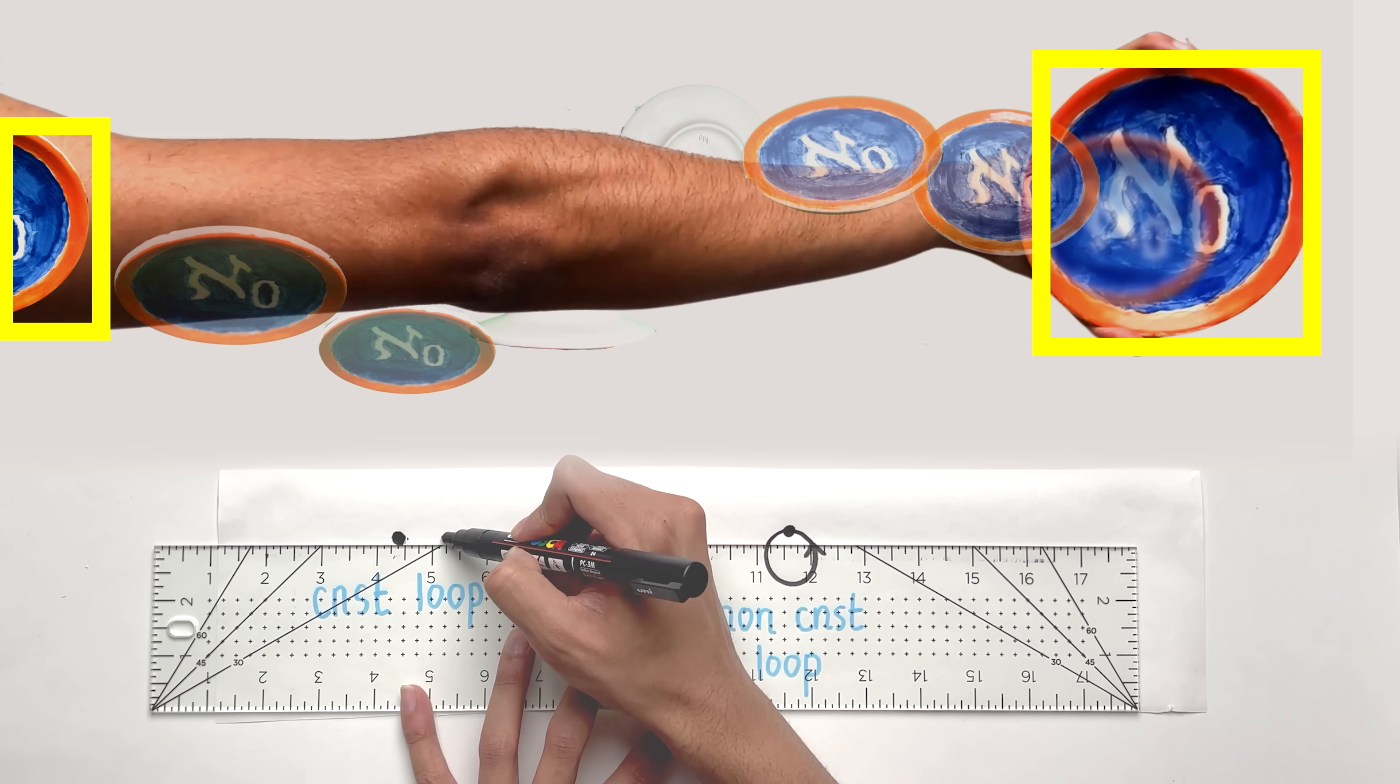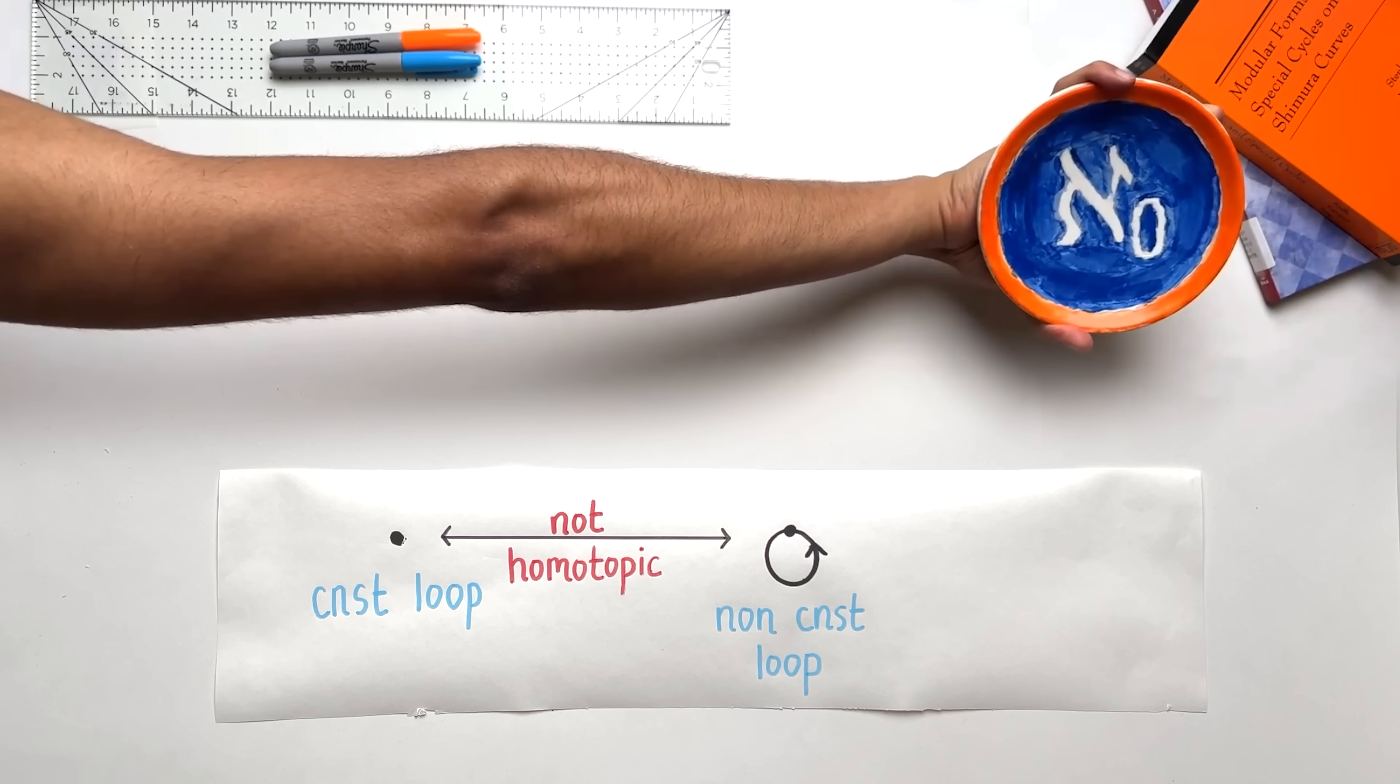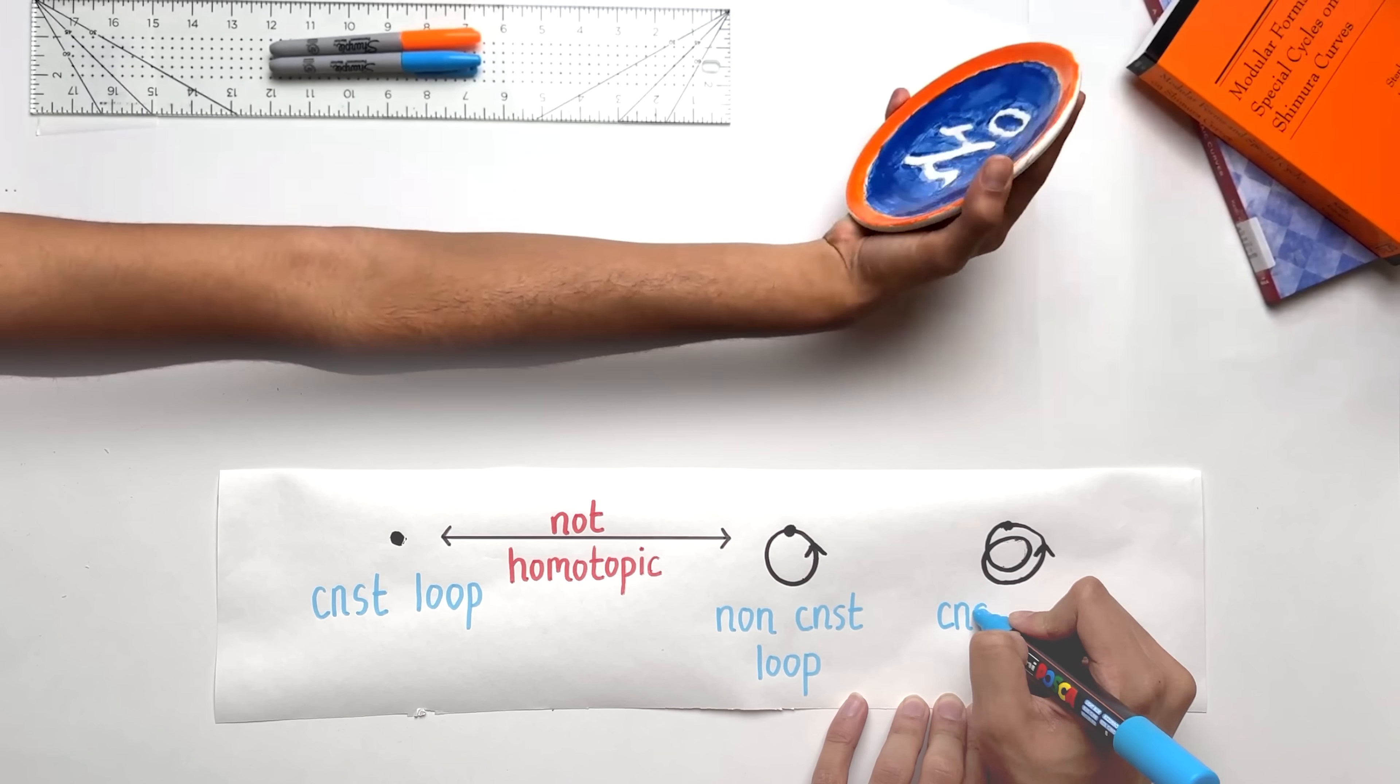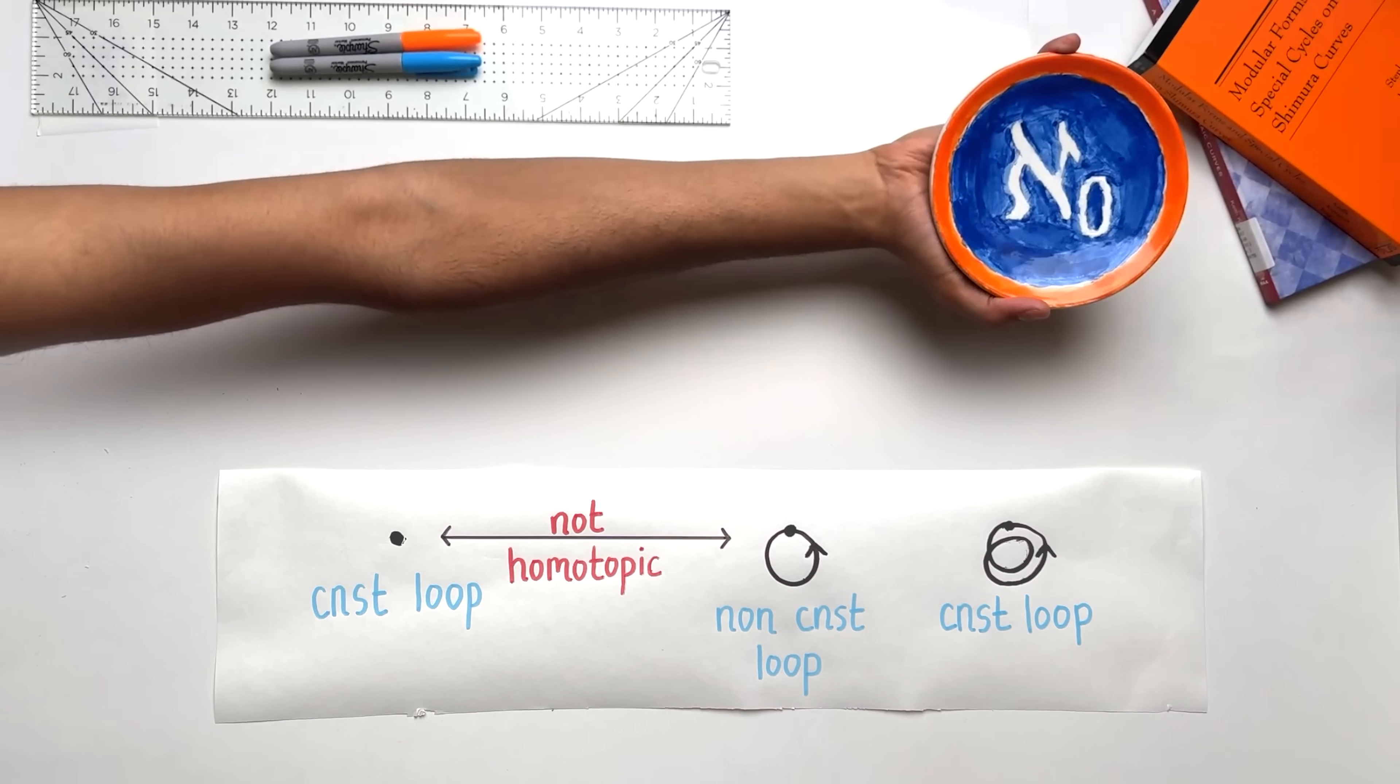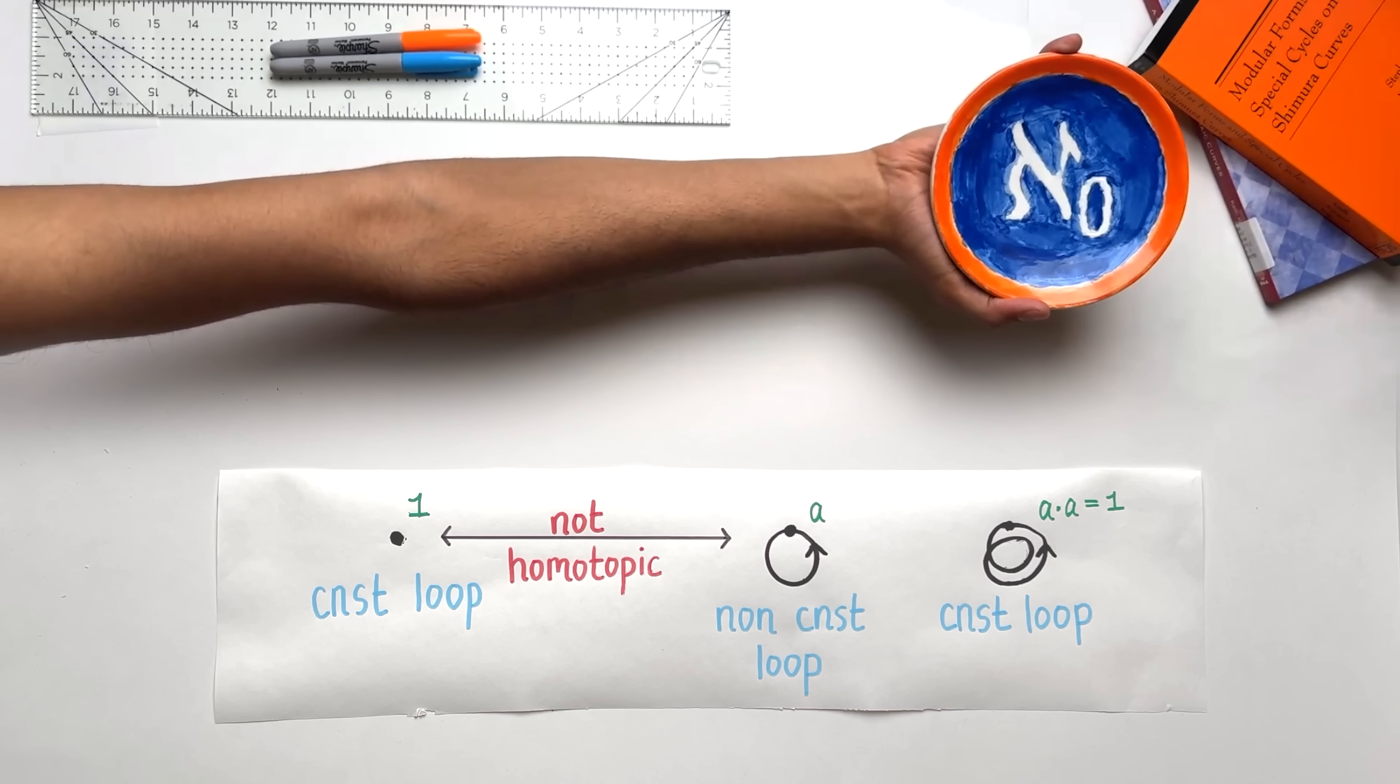These two loops are not homotopic. There's no way to transition from this loop to this loop, while keeping the endpoints fixed. But if you rotate this book again, to get a total of a 720 degree rotation, you arrive at the constant loop once more. What that means is, calling this loop A, if you travel along A twice, you arrive at the identity.